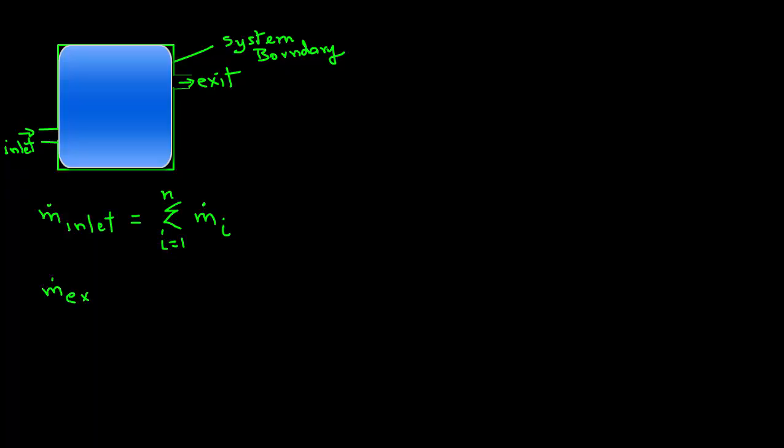The same thing we can do for the rate of mass that is exiting the system. So we have M dot exit equals summation and we can call this time E equals 1 through P and it's M dot E where M dot E represents the mass flow rate for the exit. Now, the rate of mass accumulation we can write as M dot accumulation equals dM system over dT. So what that expression tells us is that there is going to be certain accumulation over time and that accumulation is dM over dT.